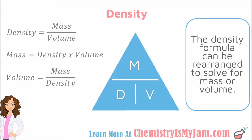The density formula can be rearranged to solve for density, mass, or volume. One handy way to remember that is through a triangle, where D is on the bottom. D is equal to mass over volume. If you are trying to solve for the volume, cover up the V, and what is left is mass over density. If you cover up the M, what is left is D times V, which is the formula for mass. So there are three different ways you can rearrange this formula depending on what you want to solve for.